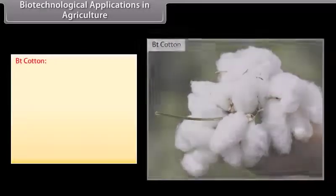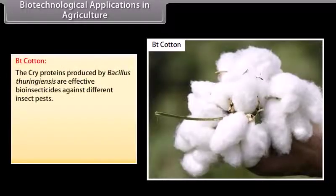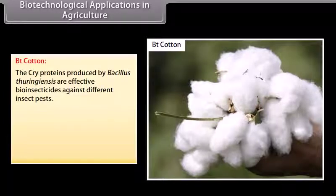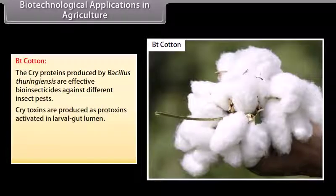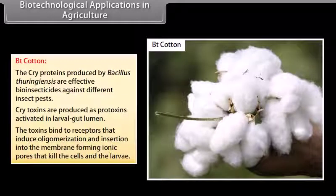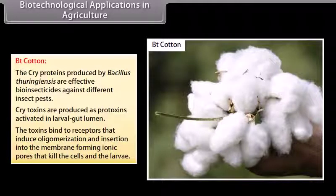Bt cotton. The cry proteins produced by Bacillus thuringiensis are effective bio-insecticides against different insect pests. Cry toxins are produced as pro-toxins, activated in the larval gut lumen. The toxins bind to receptors that induce oligomerization and insertion into the membrane, forming ionic pores that kill the cells and the larva.